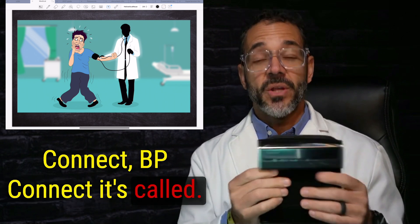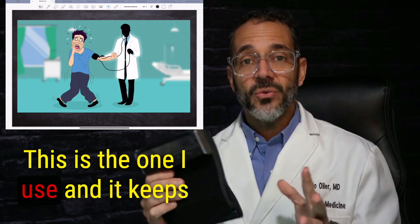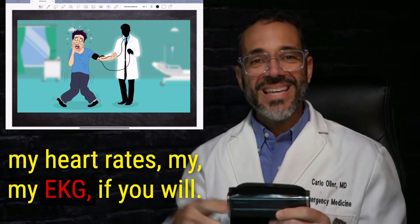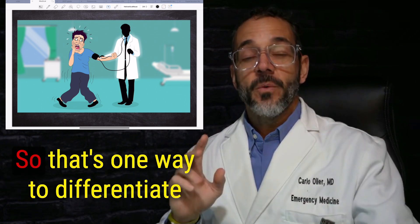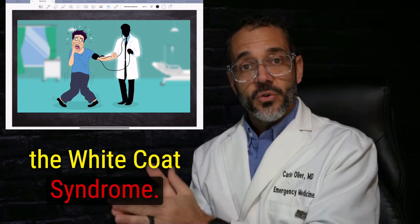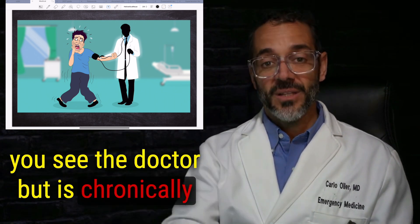And this is the CheckMe BP Connect. And I will put a description below for you. This is the one I use and it keeps all my blood pressures, my heart rates, my EKG, if you will. So that's one way to differentiate the white coat syndrome to blood pressure that is spiked when you see the doctor, but it's chronically also elevated.